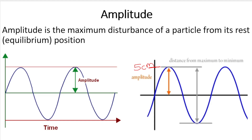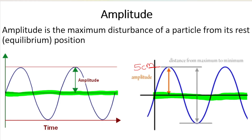Let's look at the amplitude of a wave. The definition of amplitude is: amplitude is the maximum disturbance of a particle from its rest or equilibrium position. Remember, disturbance refers to how the particles move. The equilibrium position — also called the rest position — is that central line. So the amplitude is the biggest distance a particle can move from that equilibrium position, measured up to the crest or down to the trough.